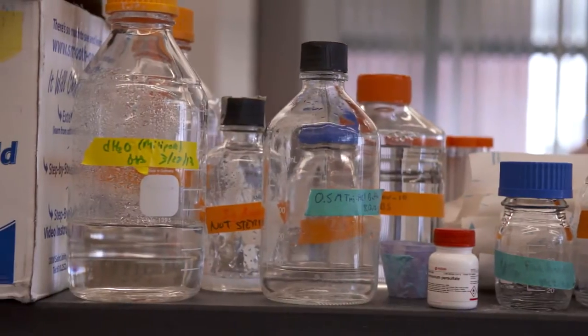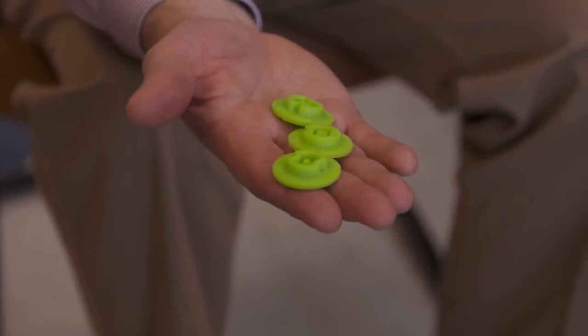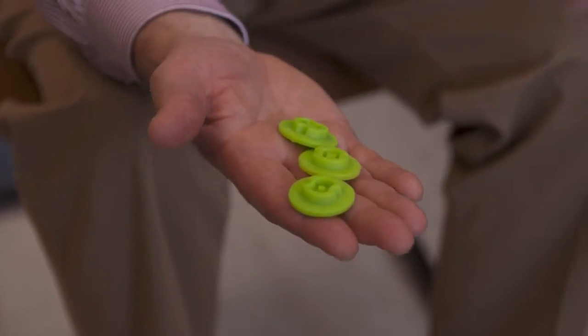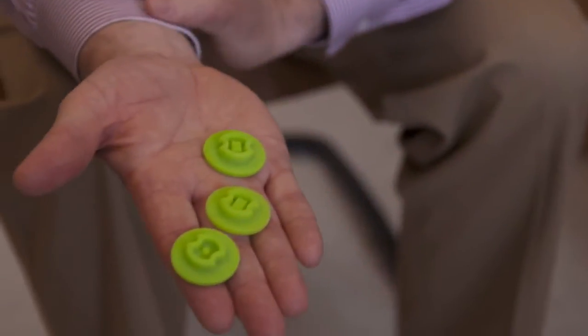This past year we just signed a deal with a major global distributor of scientific products, Sigma Aldrich. And so now the Petri dish, which was invented in Rhode Island, manufactured in Rhode Island, is actually sold all over the world.